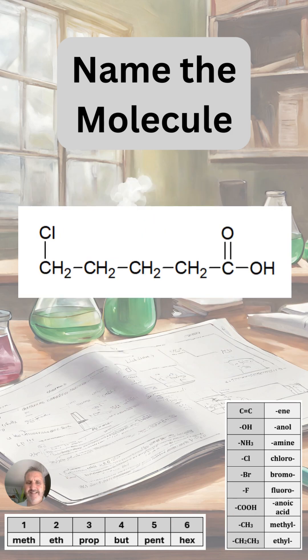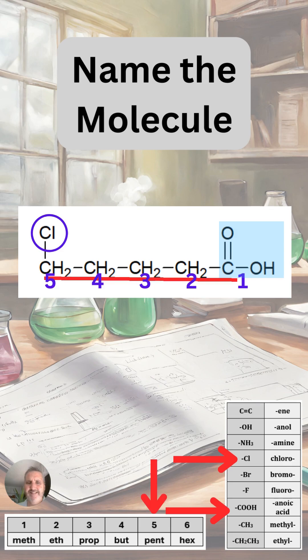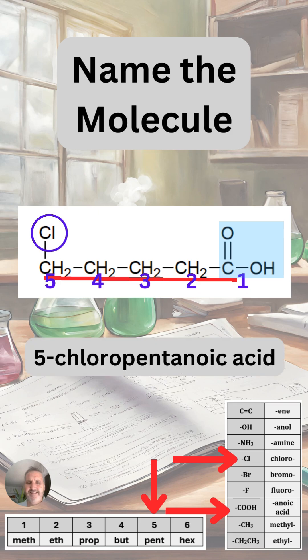Here we have a kind of a long carboxylic acid. We can see it's a carboxylic acid because on the right we have a carboxylic acid functional group — a carbon double bond joined to an oxygen and also joined to an OH group. Over on the left there is a chlorine atom joined to the leftmost carbon. The chlorine atom is joined to the fifth carbon because we always number the carboxylic acid as number one. So this is called pentanoic acid because there are five carbons in the longest chain, and we put the position of the chlorine at the front — so this is 5-chloropentanoic acid.